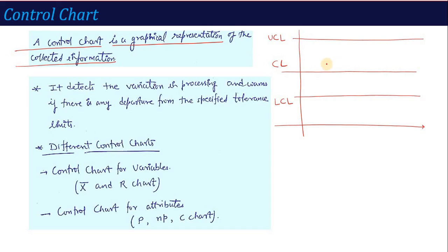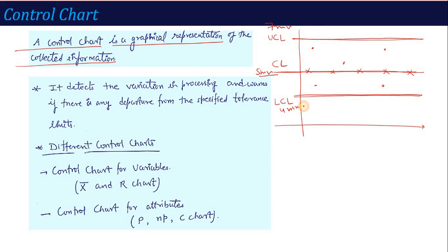If the product value lies between the upper control limit and the lower control limit, then the process is maintaining quality. Ideally, the product should lie on the center line. For example, suppose the center line is at 5 mm diameter, the upper control limit is 7 mm, and the lower control limit is 4 mm. If the diameter is between 4 and 7, it is acceptable — but the target is to be on the center line.